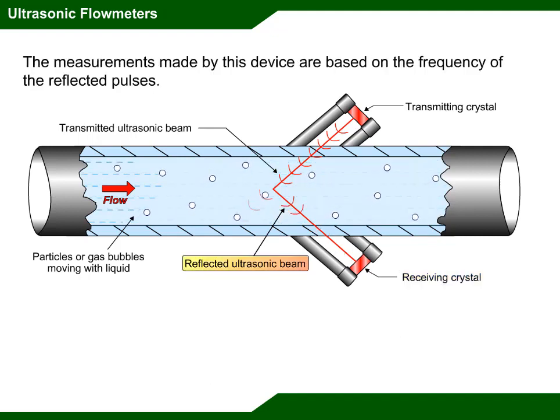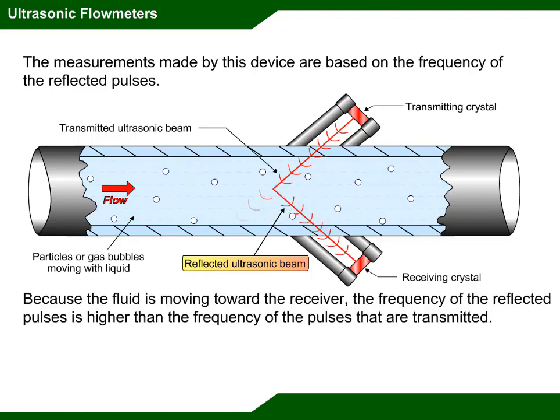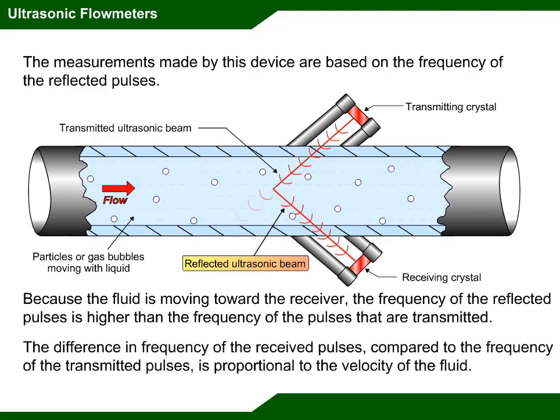This transducer converts the sound into electronic pulses that are processed by the sensor's electronics. The measurements made by this device are based on the frequency of the reflected pulses. The difference in frequency of the received pulses compared to the frequency of the transmitted pulses is proportional to the velocity of the fluid.